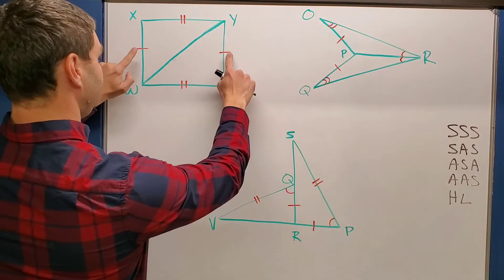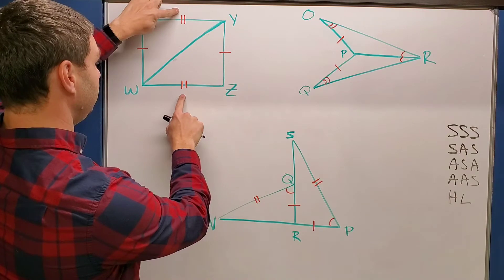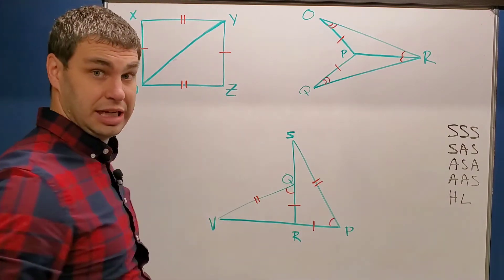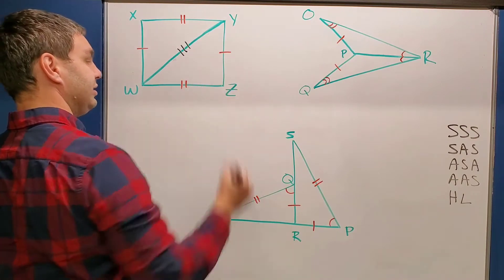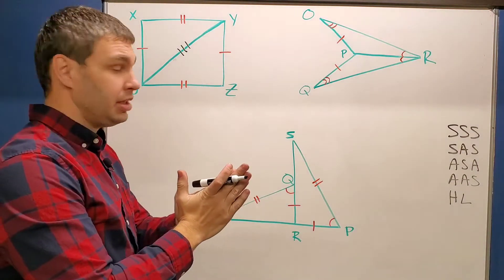What do we have here? We have two sides that are the same, another two sides are the same, and then these also share side WY. So I can say this third side is the same because that's the side they share.